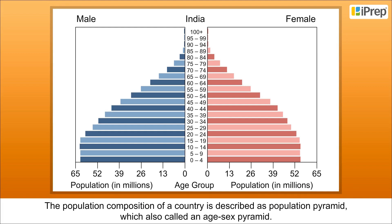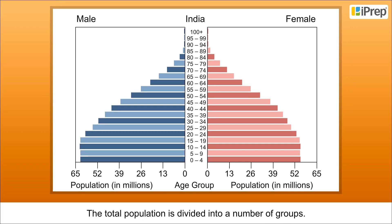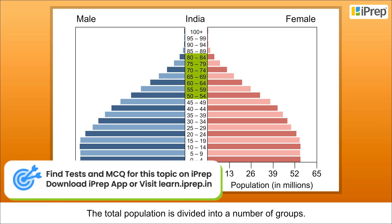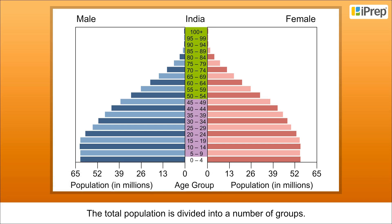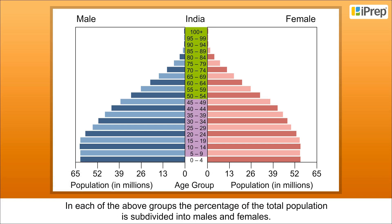The population composition of a country is described as a population pyramid, which is also called an age-sex pyramid. The total population is divided into a number of groups, for example aged over 50 years, 5 to 9 years etc. In each of these groups, the percentage of the total population is subdivided into males and females.